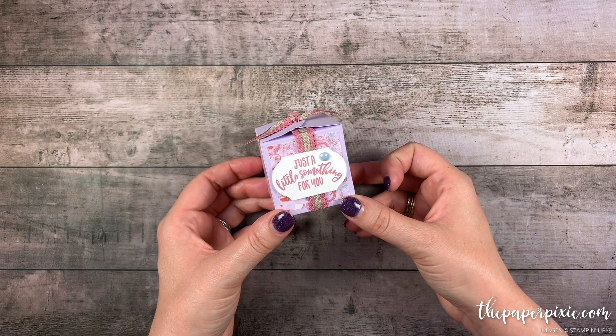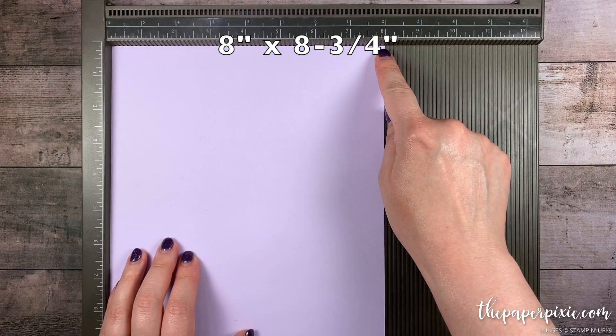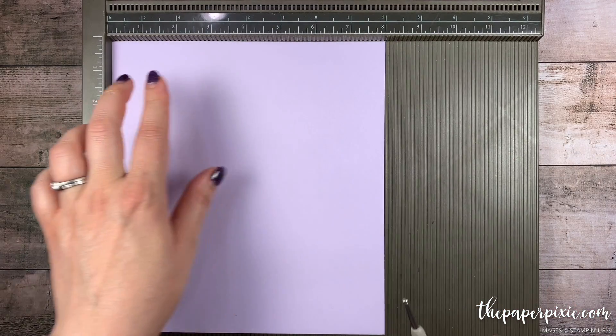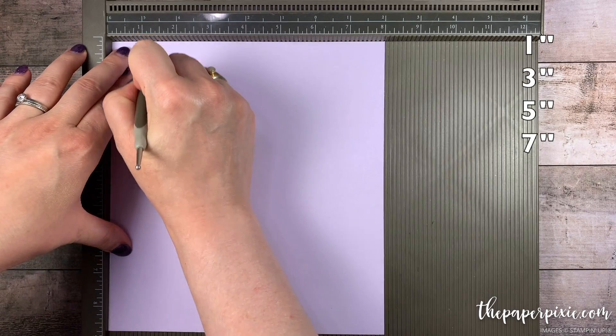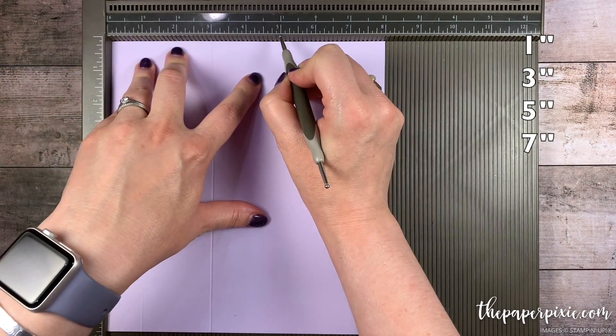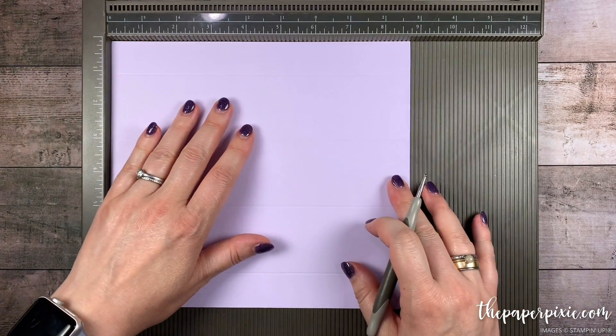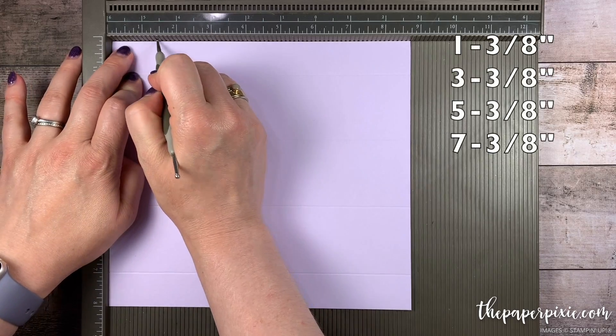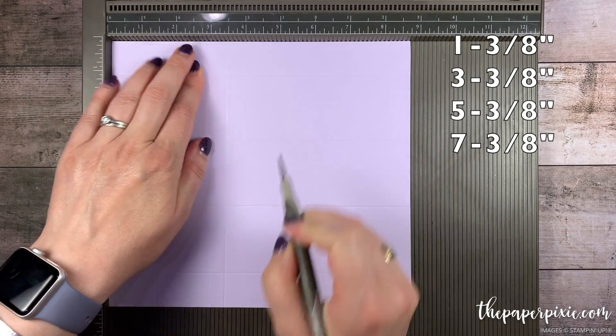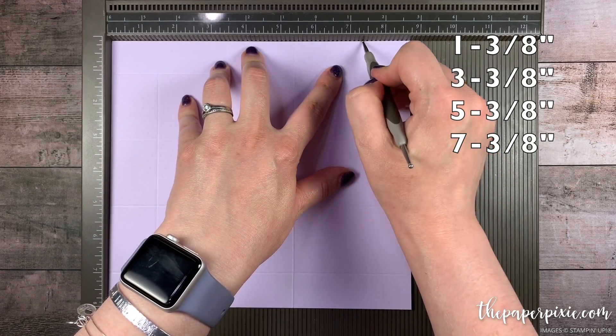So let me show you how easy this is to make. We're going to start with a piece of purple posy cardstock that measures 8 inches by 8 and 3 quarter inches. And along the 8 inch side we're going to score this at 1, 3, 5, and 7. And along the 8 and 3 quarter inch side we're going to score this at 1 and 3 eighths, 3 and 3 eighths, 5 and 3 eighths, and 7 and 3 eighths.